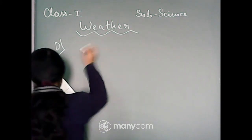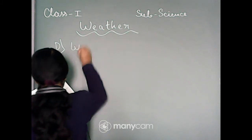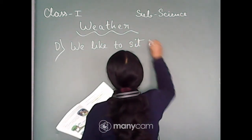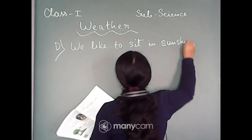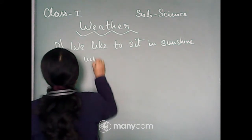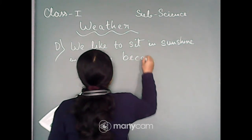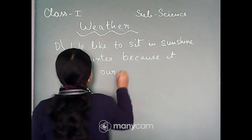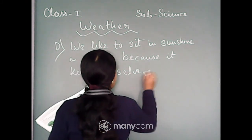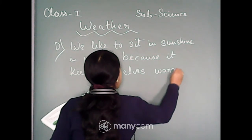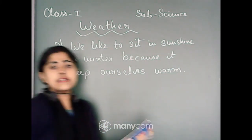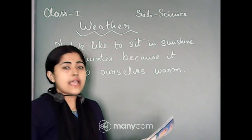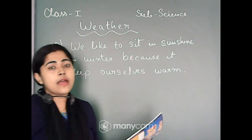Why do we like to sit in sunshine in winters? Because sunshine gives us heat and we will be warm. That is why we sit in sunshine in winter — to keep ourselves warm.